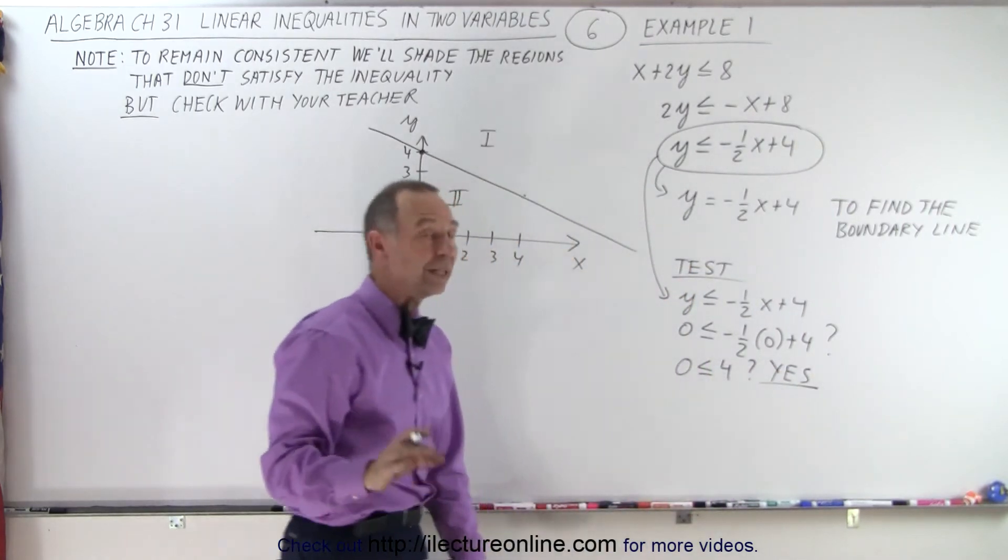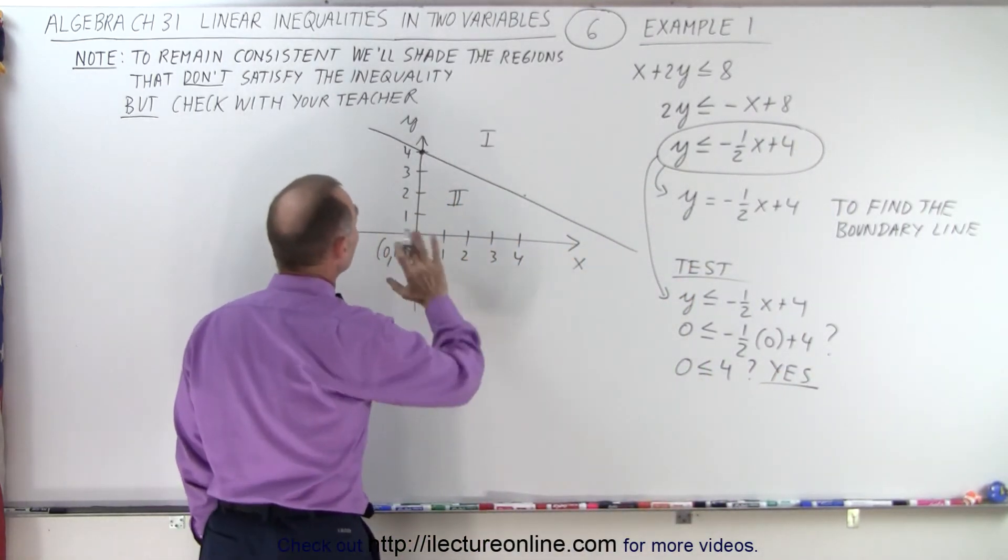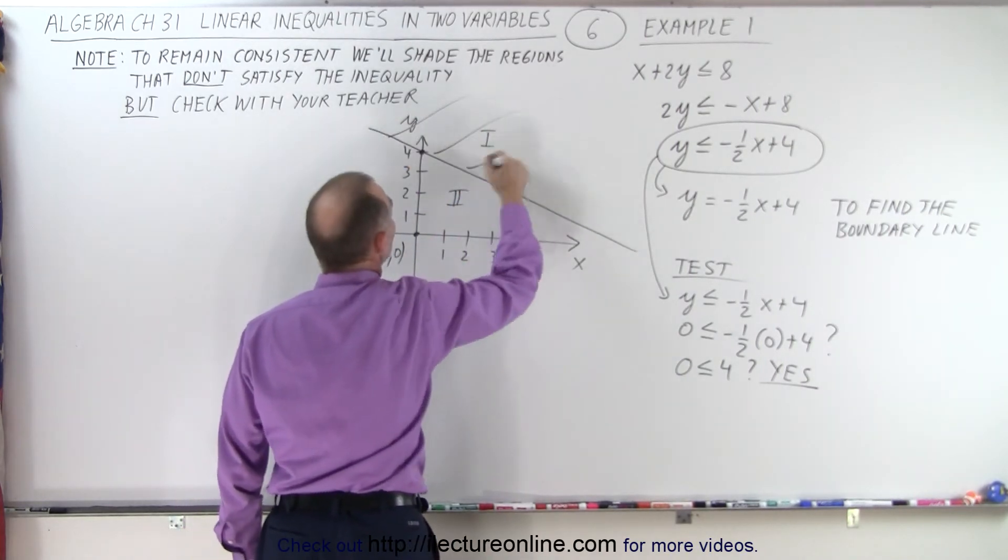So we picked the point in the region that satisfies the inequality, which means the other region does not. So we get rid of the other region.